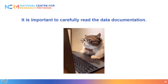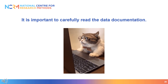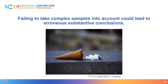It is important that researchers who use social survey data resources fully understand the way in which the data were collected. Carefully reading the documentation associated with a data resource is absolutely essential. Failing to take complex samples into account can result in incorrectly estimated standard errors. Standard errors are often underestimated, which leads to an increased probability of Type 1 error — in other words, your results may suggest statistical significance when really there is not.